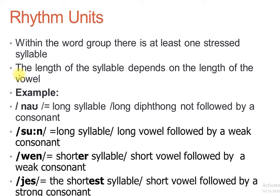The length of the syllable depends on the length of the vowel. The syllable is formed based on the vowel it contains — if the vowel is strong, the syllable is strong; if the vowel is weak, the syllable is weak. If the vowel is long, the syllable is long; if the vowel is short, the syllable is short. The length of the syllable depends on the length of the vowel.